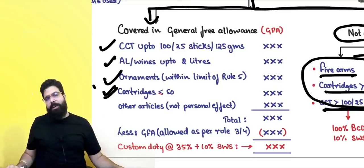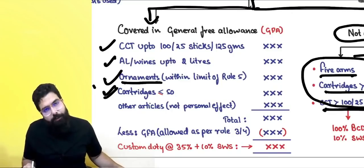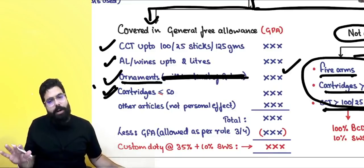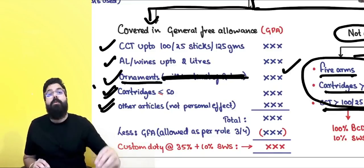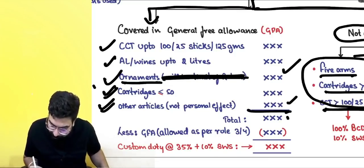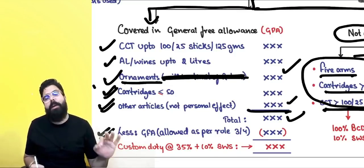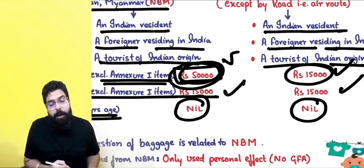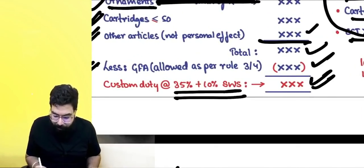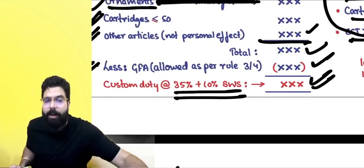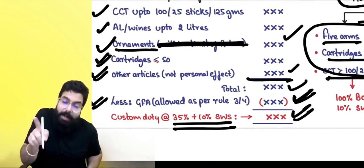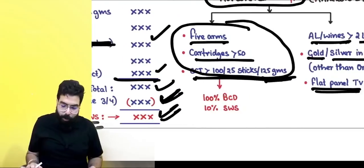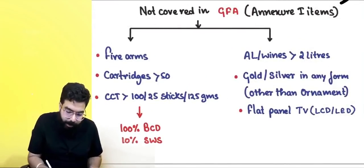Items within limits — cigarettes up to 100, cigars up to 25, tobacco up to 125 grams, alcoholic liquor or wine up to 2 liters, ornaments within Rule 5 limits, cartridges up to 50 — are added to the general free allowance pool along with any other articles like household effects. The total is calculated, then the GFA (₹50,000 for other countries; ₹15,000 for Nepal/Bhutan/Myanmar by air) is deducted, and the balance attracts 35% + 10% SWS. If stay exceeds one year, the additional jewelry allowance also applies.